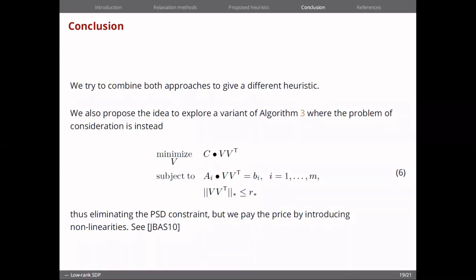And to end this presentation, we just want to explore another variant of algorithm 3, in which now the problem in consideration factors the decision variable X as V times V transpose, allowing us to leave the PSD constraint.